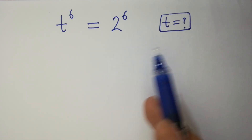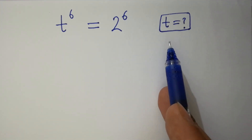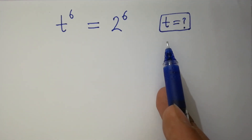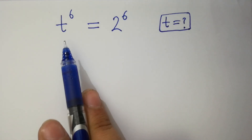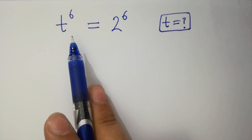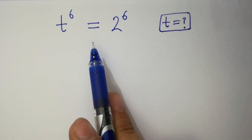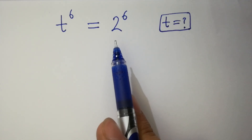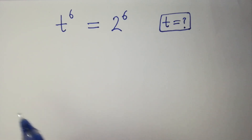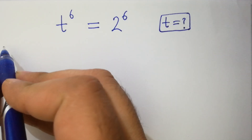Hello friends, find the value of t if t to the power 6 equals 2 to the power 6. Let's have a solution.